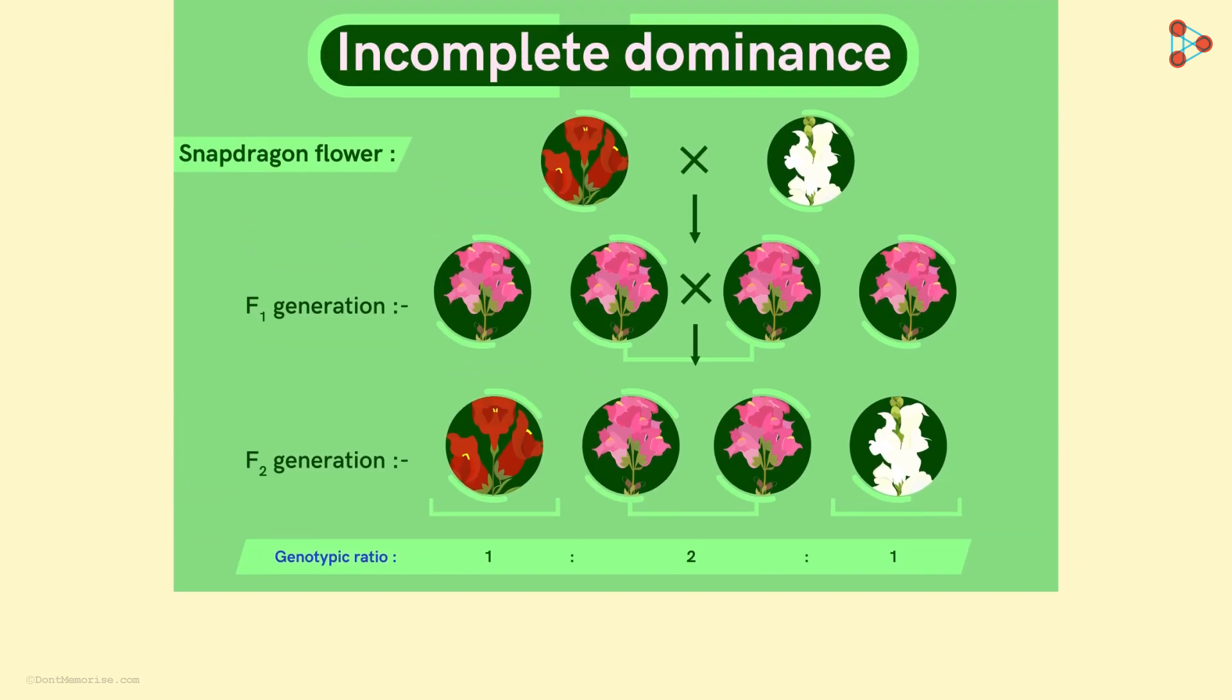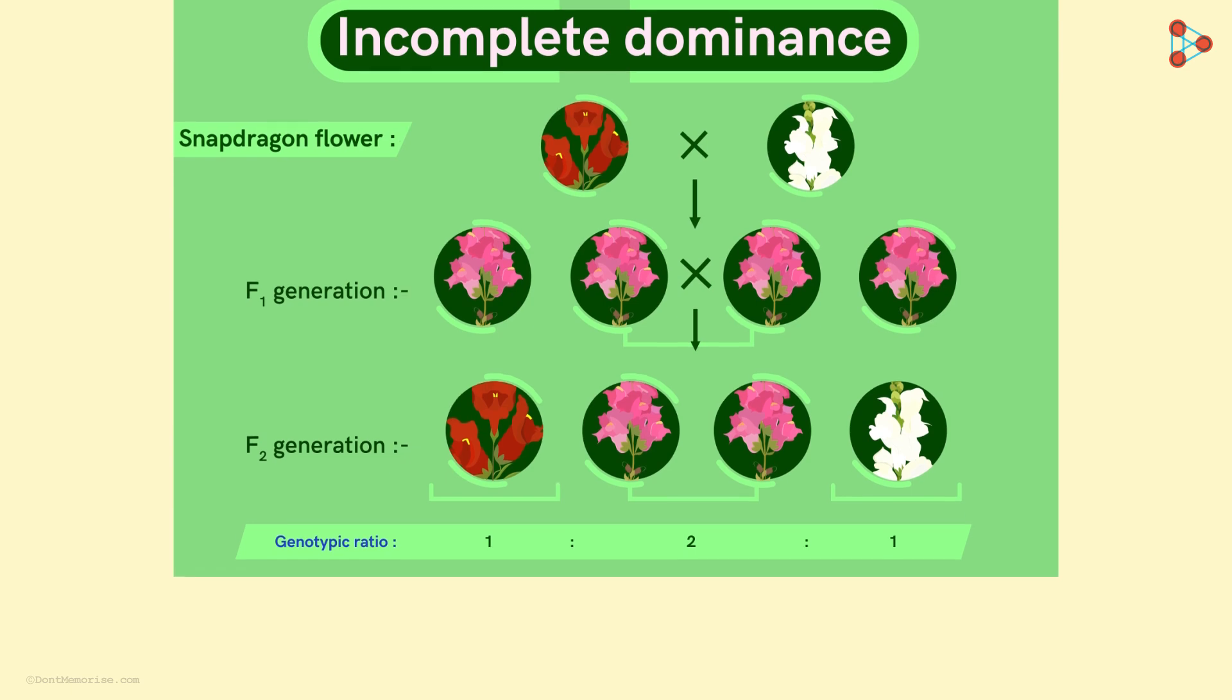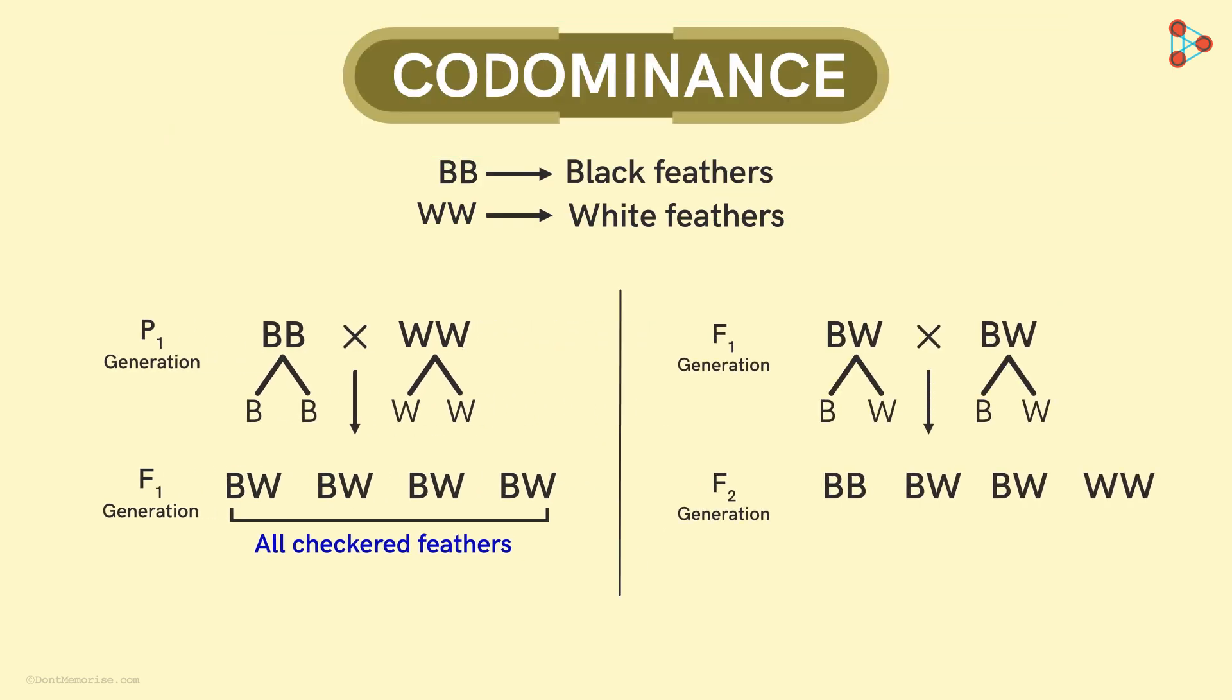Just like incomplete dominance, even co-dominance follows a pattern. The F2 generation is obtained in the typical genotypic ratio 1 to 2 to 1. And the offsprings in the F2 generation exhibit the same ratio phenotypically as well.